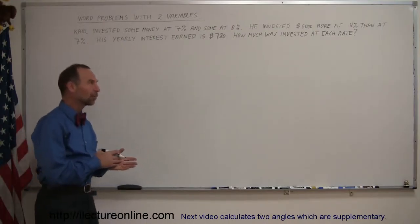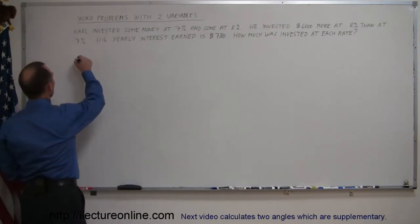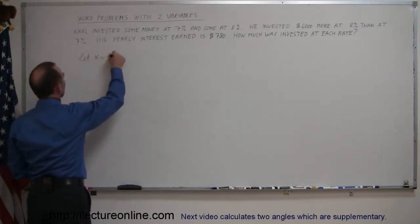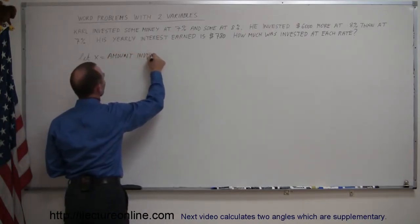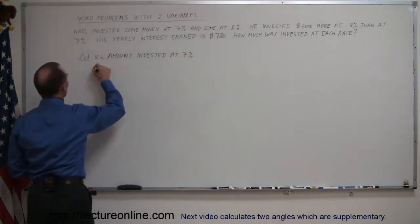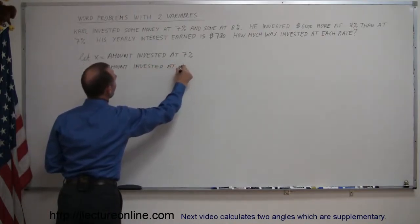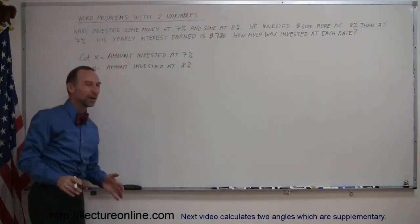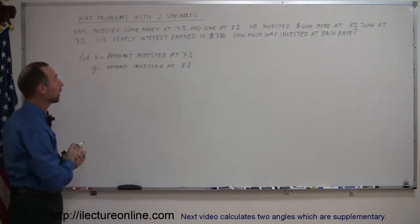Just like all these types of problems with two variables, let's define very carefully what each variable represents. Let x equal the amount invested at 7%, and let y equal the amount invested at 8%. You may wonder why write all this out — it's a very important step, so do not skip it.